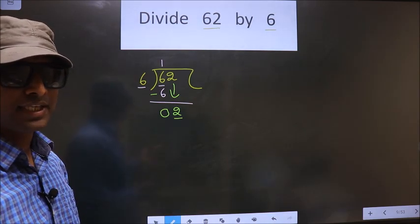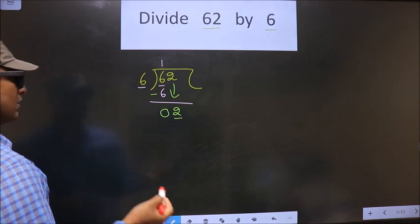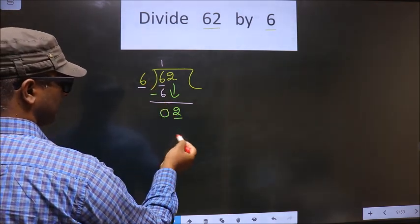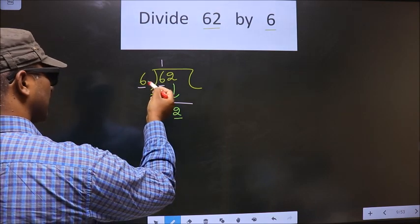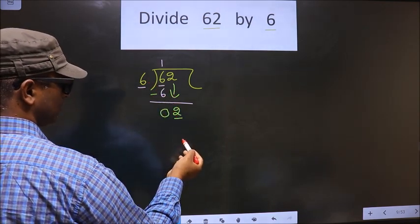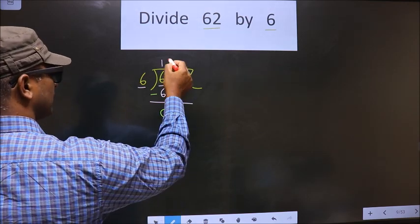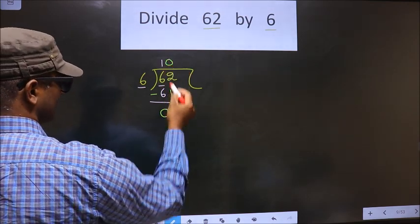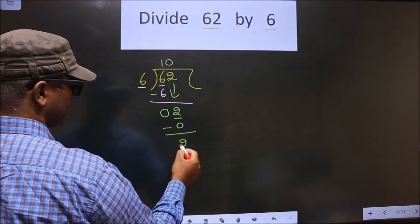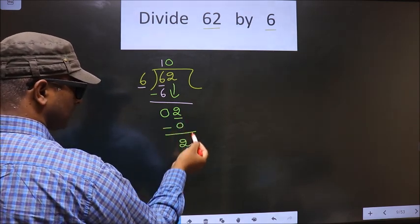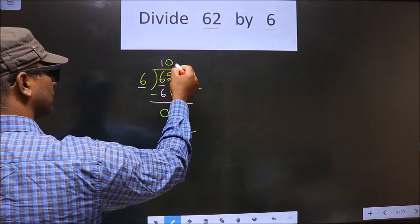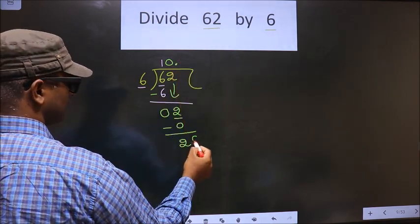Instead, what you should think is: what number shall I multiply to 6 to get a number close to 2 here? If I multiply by 1, I get 6 here, and 6 is larger than 2, so we should multiply by 0. So 6 into 0 is 0. Now you subtract and you get 2. Since I am not taking any number down now, you can put the decimal and 0 here.